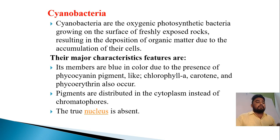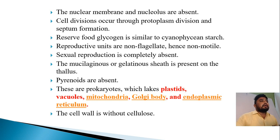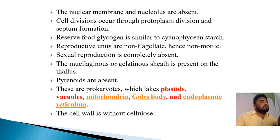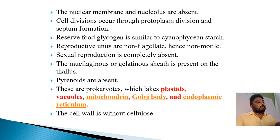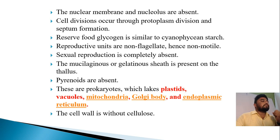The pigments are distributed in the cytoplasm instead of chromatophores. A true nucleus is absent in cyanobacteria — the nuclear membrane and nucleolus are also absent. Cell division occurs through protoplasm dividing by septum formation. Reserve glycogen is similar to cyanophycean starch. The reproduction units are non-flagellate, hence non-motile. Sexual reproduction is completely absent in cyanobacteria. A mucilaginous or gelatinous sheath is present on the thallus. Pyrenoids are absent. These are prokaryotes which lack plastids, vacuoles, mitochondria, Golgi body, and endoplasmic reticulum. The cell wall is without cellulose.